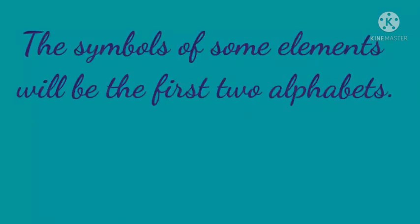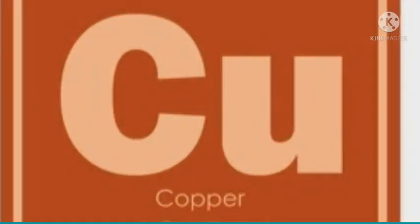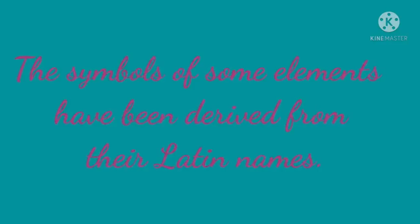Rule No. 2: The symbols of some elements will be the first two alphabets, where the first letter is written as a capital letter and the second letter is written as a small letter. For example, the symbol for calcium is Ca, for copper is Cu, and for zinc is Zn.